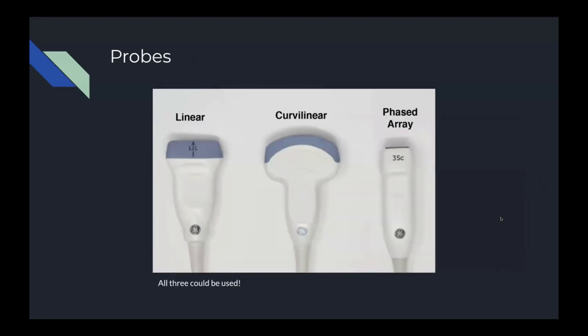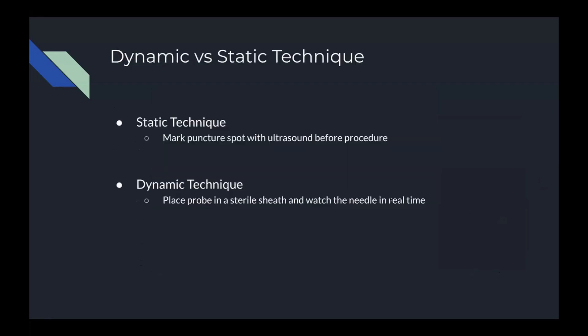The probes used in this procedure include all three types, which I'll mention as we move forward. There are two different types of thoracentesis being performed. The static technique marks a puncture spot using ultrasound before the procedure but does not utilize ultrasound during needle insertion and fluid extraction. The dynamic technique, however, requires a physician to place a probe in a sterile sheath and watch the needle in real time as they insert it and extract the liquid. This is the technique I'll be focusing on, as it is more effective and safer for the patient.